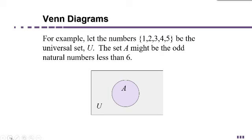For example, suppose our universe of possibilities includes the elements 1, 2, 3, 4, and 5—that's our universal set. Then maybe set A could be the odd natural numbers less than 6. Which elements of U fit that description?